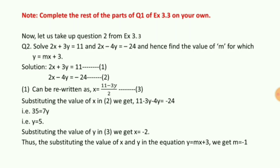The rest of the parts of question 1 are to be done on your own as homework in your notebook. Let us take up question 2 from exercise 3.3. Question 2 is: solve 2x plus 3y equal to 11 and 2x minus 4y equal to minus 24, and hence find the value of m for which y equal to mx plus 3. We will first use the substitution method to solve for x and y, then substitute those values to find m. I will take the two equations to be the first and second equations.